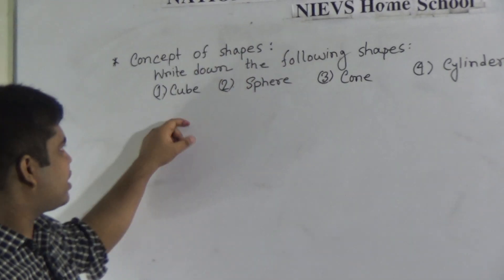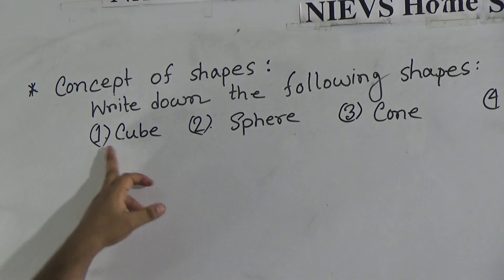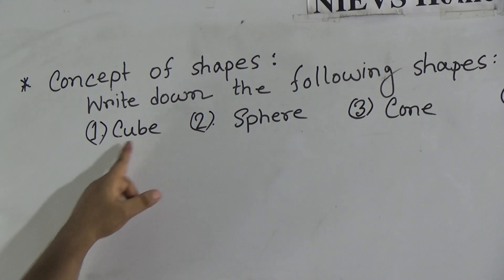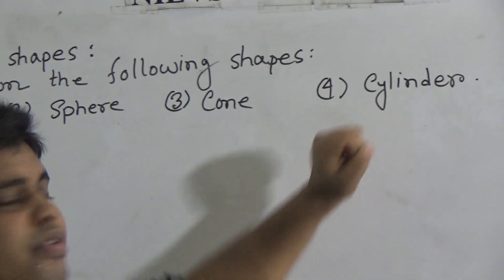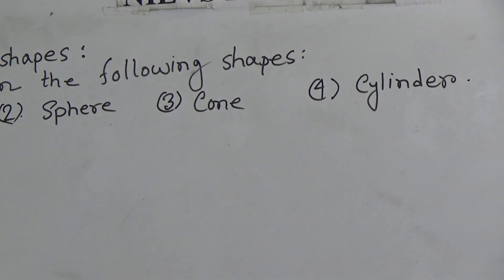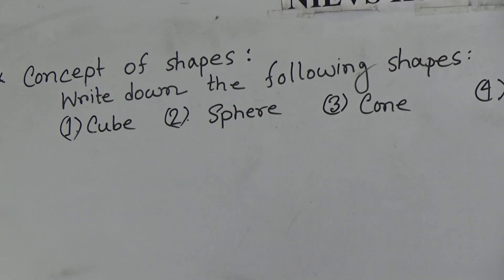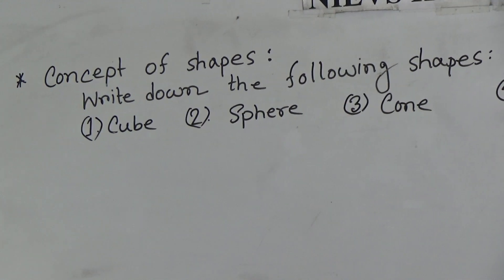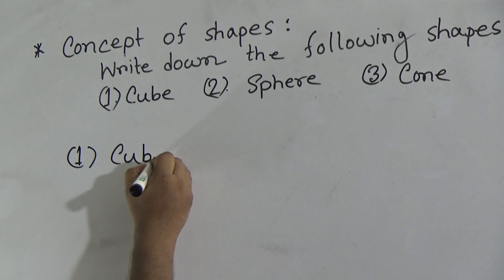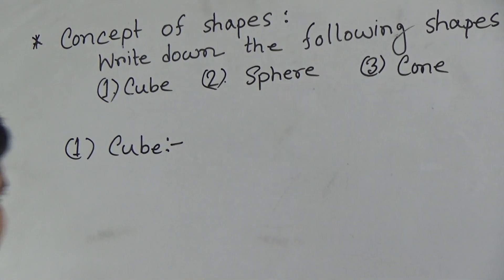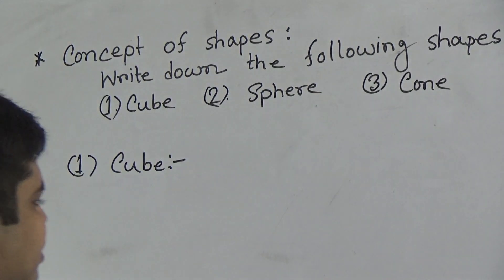So my dear students, let us start our class. The question is: write down the following shapes. Here, four shapes are given — number one: cube, number two: sphere, number three: cone, number four: cylinder. Let us start our class. First we will draw a cube.